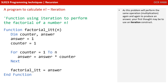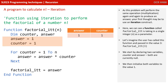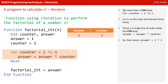As this problem will perform the same operation — multiplication — again and again to produce an answer, your first thought might be to use an iteration construct. We've written a function here for producing the factorial of an integer using iteration, and it's on the screen. Here we can see a function called factorial_it taking a single integer n as a parameter. Let's imagine the user has called this function and passed it the value 3. We start by declaring two variables, counter and answer, both currently null, then initialize both to 1.